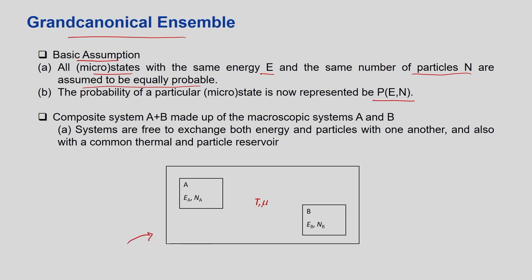Consider a thermal reservoir which is the infinite source of both temperature T and chemical potential μ. Because of T and μ, it can easily exchange the number of molecules across subsystem A and subsystem B. The composite system A+B is made of the macroscopic systems A and B. Systems are free to exchange both energy and particles with one another and also with a common thermal and particle reservoir. Temperature gives you the energy exchange and μ gives you the number of particles.